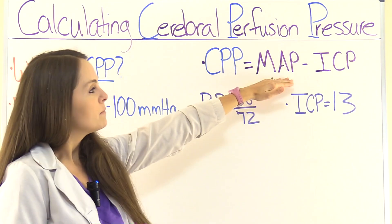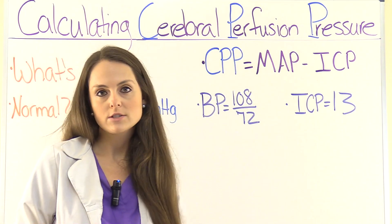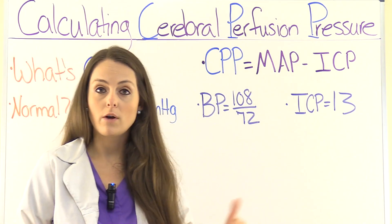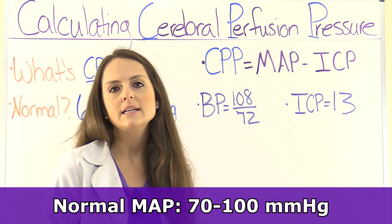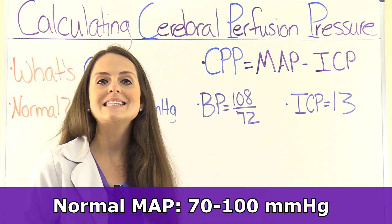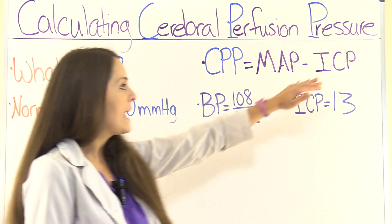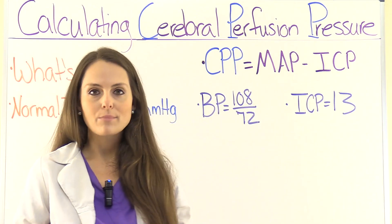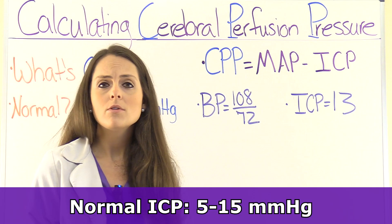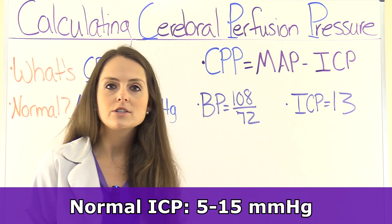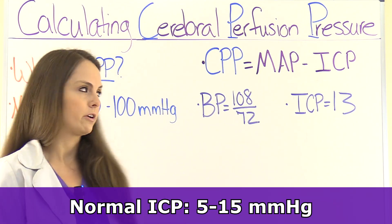The MAP, the mean arterial pressure, is the amount of pressure in a person's arteries during one cardiac cycle, and a normal MAP is anywhere between 70 to 100 millimeters of mercury. Intracranial pressure is the pressure within the skull, and a normal intracranial pressure is between 5 to 15 millimeters of mercury.